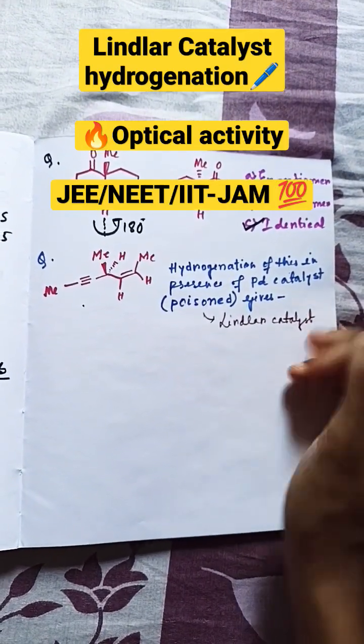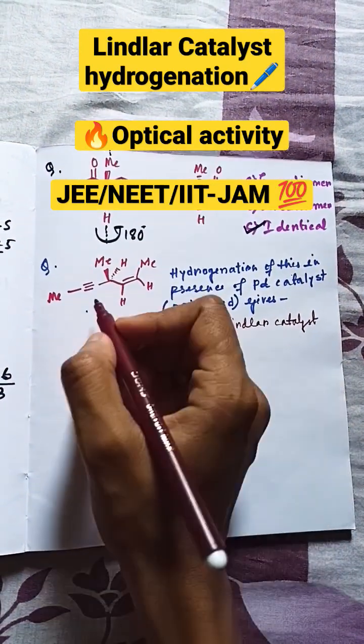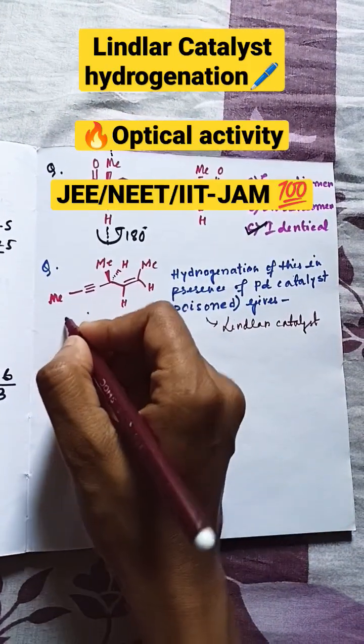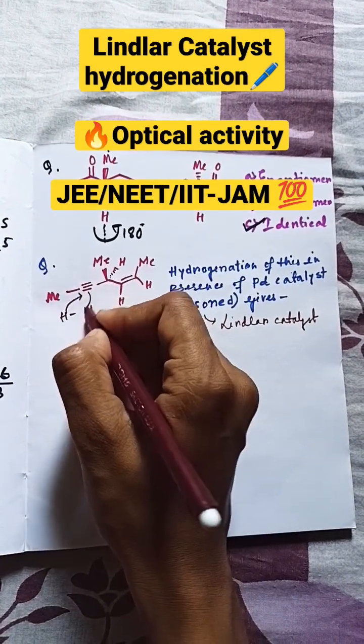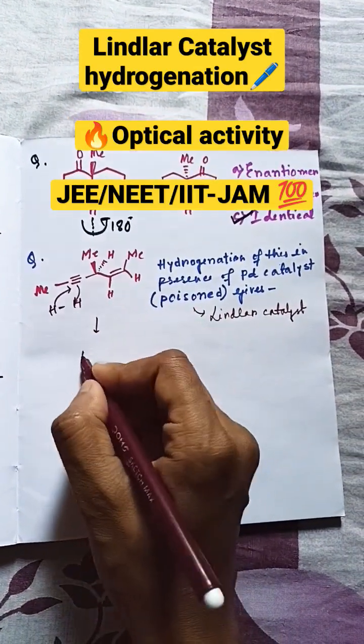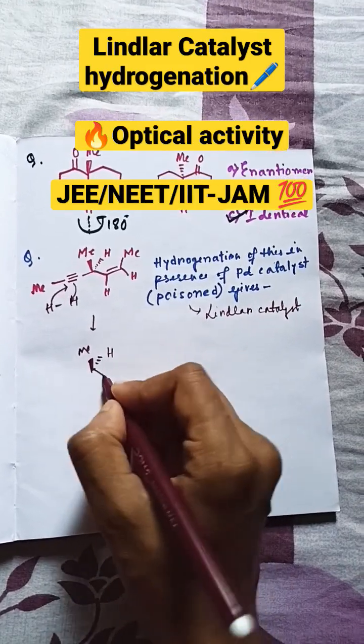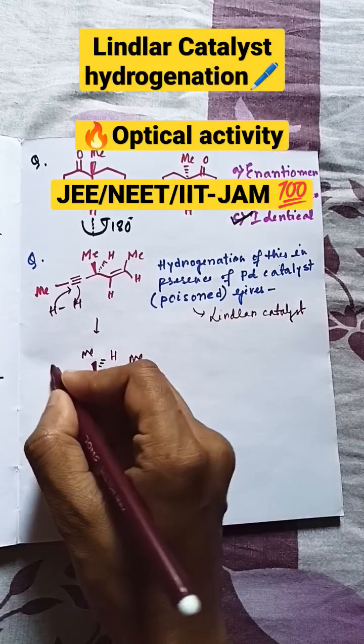So what will Lindler catalyst do? It will reduce this alkyne to alkene, and that too in syn addition—that means the hydrogen addition will be in syn addition. So it will form the compound. If syn addition, it will have the similar two groups on the same side.